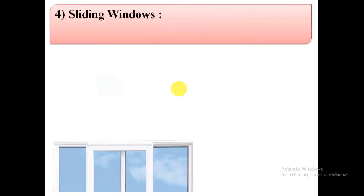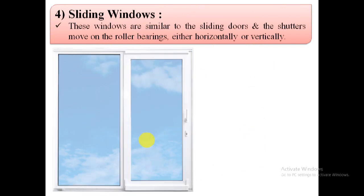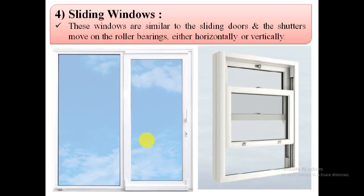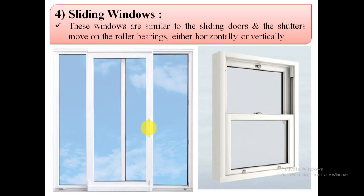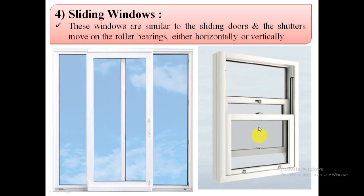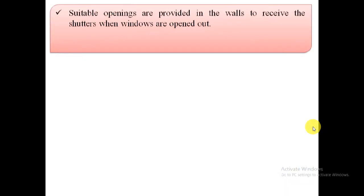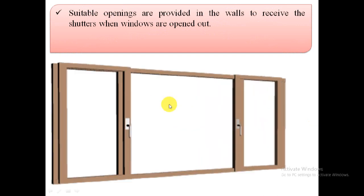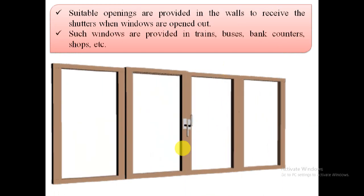The fourth type is sliding windows. Sliding windows are similar to sliding doors and the shutters move on roller bearings either horizontally or vertically. In sliding windows, suitable openings are provided in the walls to receive the shutters when the windows are opened. Such windows are commonly provided in trains, buses, bank counters, shops, etc.